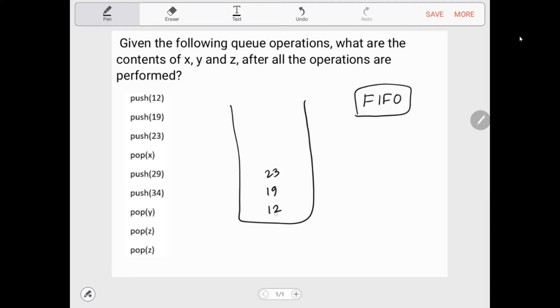So 12 is popped and stored in x. Then we push 29, push 34, then we pop y.